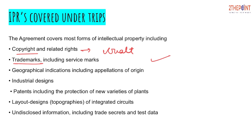Next is geographical indication, which is given to a product produced with certain characteristics in a particular region. For example, Bengali Rosagulla or Banarasi Sari — these products have certain set characteristics that can only be found in that particular region. If Rajasthan also produces Rosagulla, it cannot be called Bengali Rosagulla. Similarly, a Sari made elsewhere cannot be termed a Banarasi Sari — only a Sari produced in Banaras with the specific set of characteristics and the geographical indication tag can carry that name.